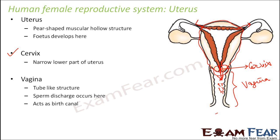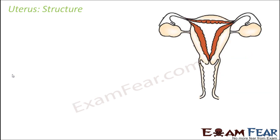The vagina also acts as the birth canal. The baby remains in the uterus for nine months, and when delivery occurs, the uterine muscles contract and push the baby downward. The baby moves through the vaginal tube and is brought out through the vaginal opening.